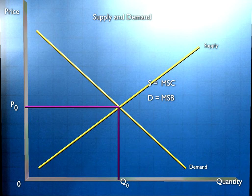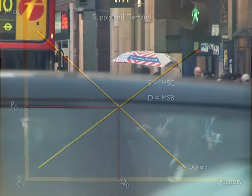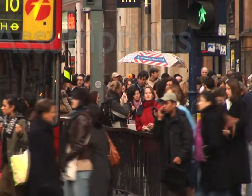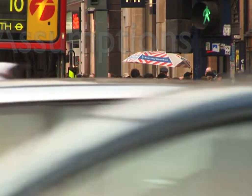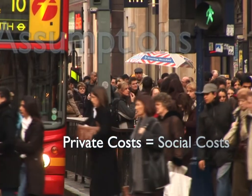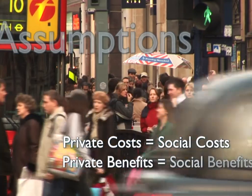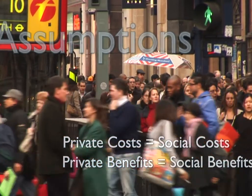But in order to arrive at that conclusion, we needed to make two crucial assumptions. We needed to assume that private costs is the same as social costs, and we needed to assume that private benefits is the same as social benefits.